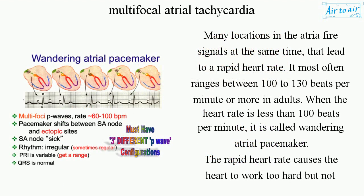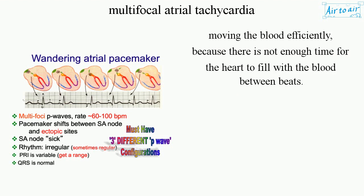Many locations in the atria fire signals at the same time, leading to a rapid heart rate. It most often ranges between 100 to 130 beats per minute or more in adults. When the heart rate is less than 100 beats per minute, it is called wandering atrial pacemaker. The rapid heart rate causes the heart to work too hard but not move blood efficiently, because there is not enough time for the heart to fill with blood between beats.